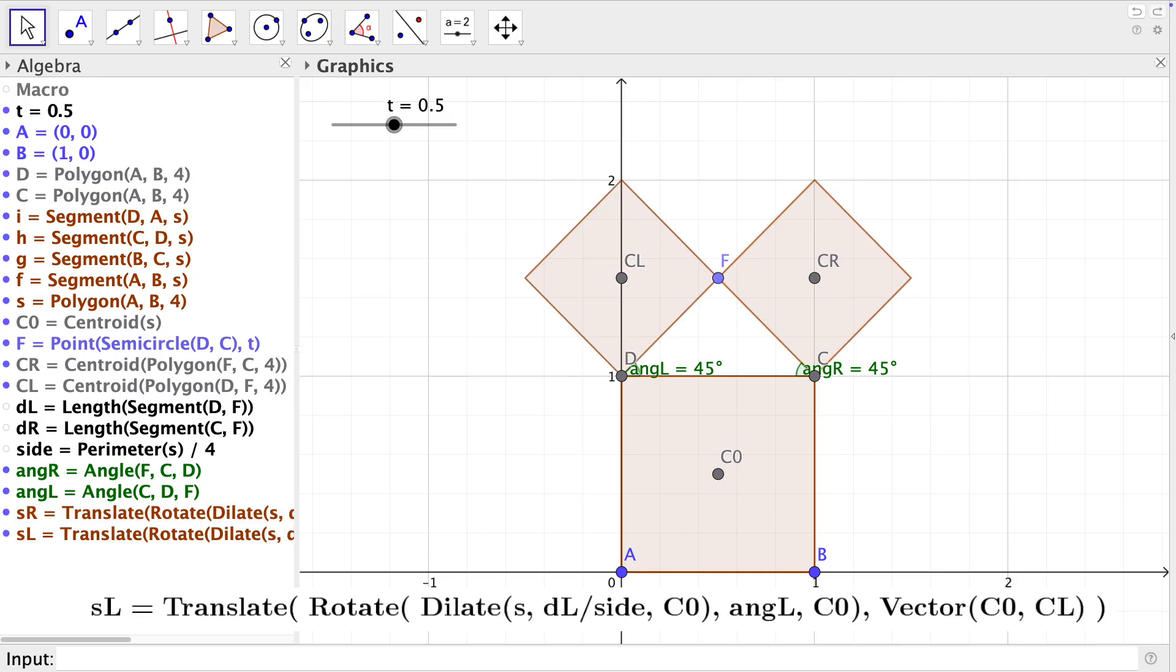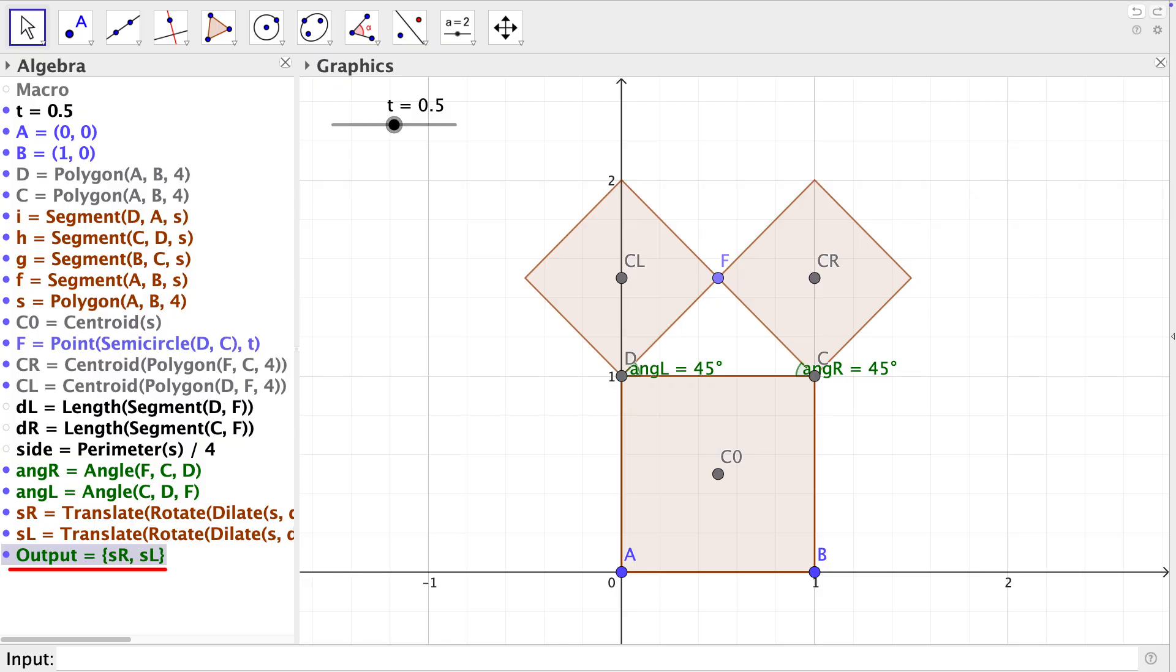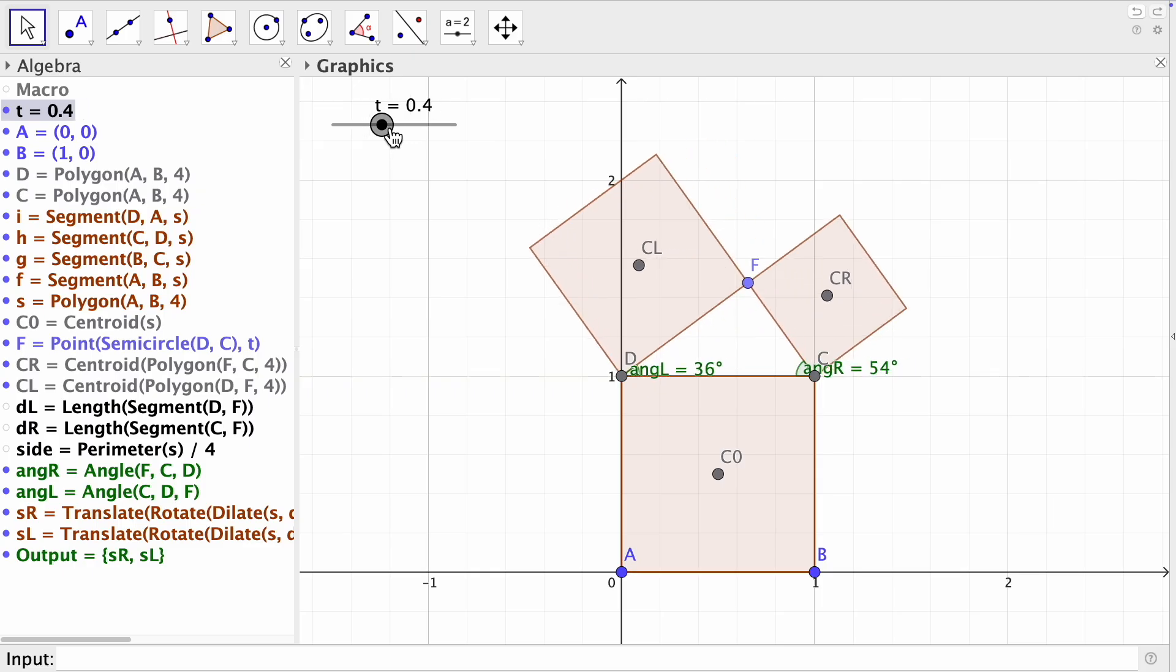The square SL is defined in a similar way but for the values on the left side. Finally, we define the list with name output, which contains the two squares that we just defined. And that's it! We obtained our initial geometric shape. This object will be the base of our construction using iteration.